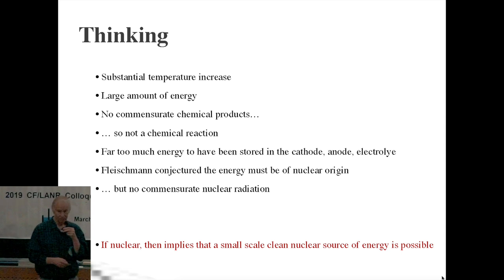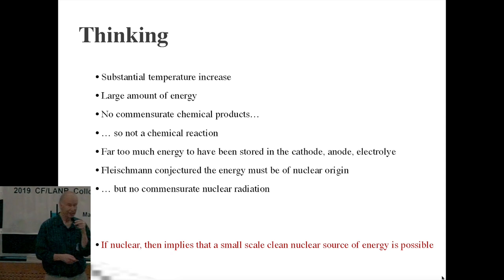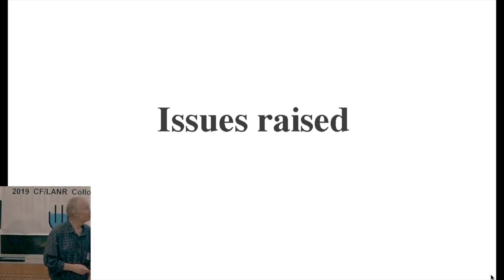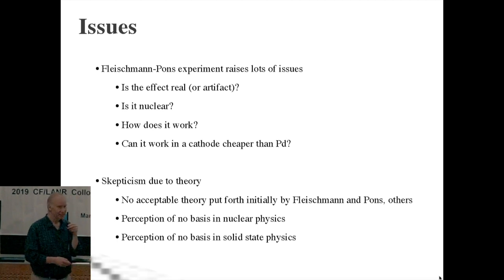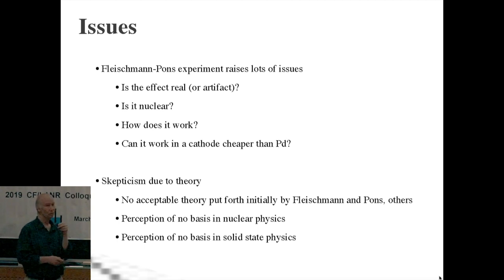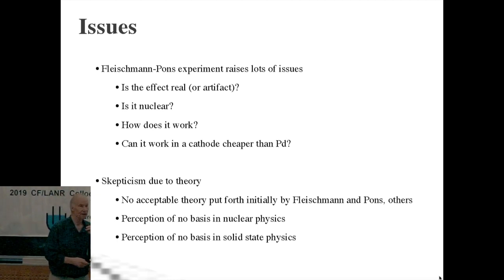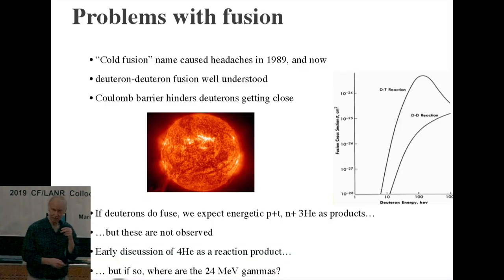On the other hand, if you make nuclear energy, you usually get energetic nuclear radiation. In this case, we don't see commensurate amounts of energetic nuclear radiation. In some experiments, there are low-level nuclear products. Okay, so 1989, there were many issues raised. One is the effect real, or artifact. Is this nuclear, a giant question is how it works, and can it work in cathodes cheaper than palladium in case of commercial technologies. The origin of the skepticism back in 1989, at least from my perspective, was theoretical.